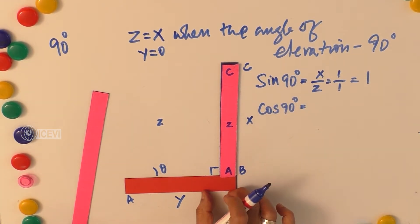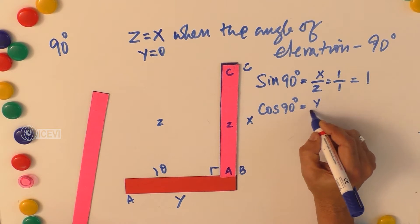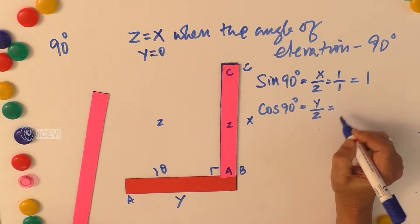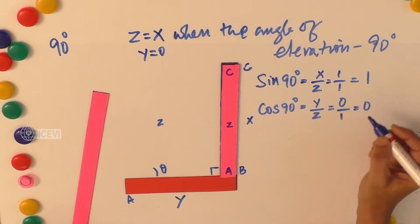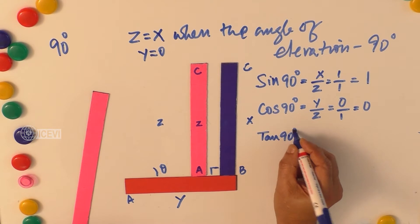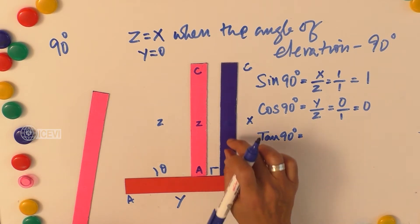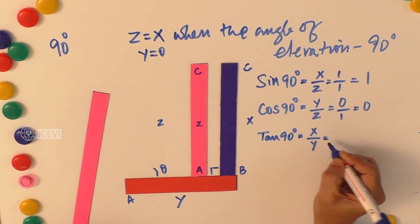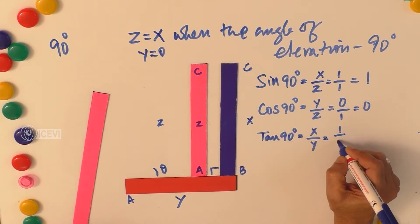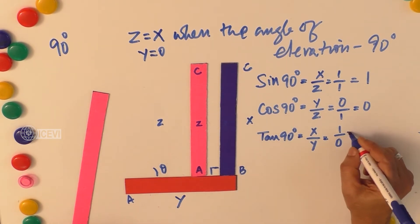Cos 90 degrees equals adjacent divided by hypotenuse. Here the adjacent is Y and hypotenuse is Z, so it is 0 by 1, which equals 0. Tan 90 degrees is opposite by adjacent, so it is X by Y. In this case, opposite is 1 unit and adjacent is 0 when theta becomes 90 degrees, so tan 90 degrees is undefined.